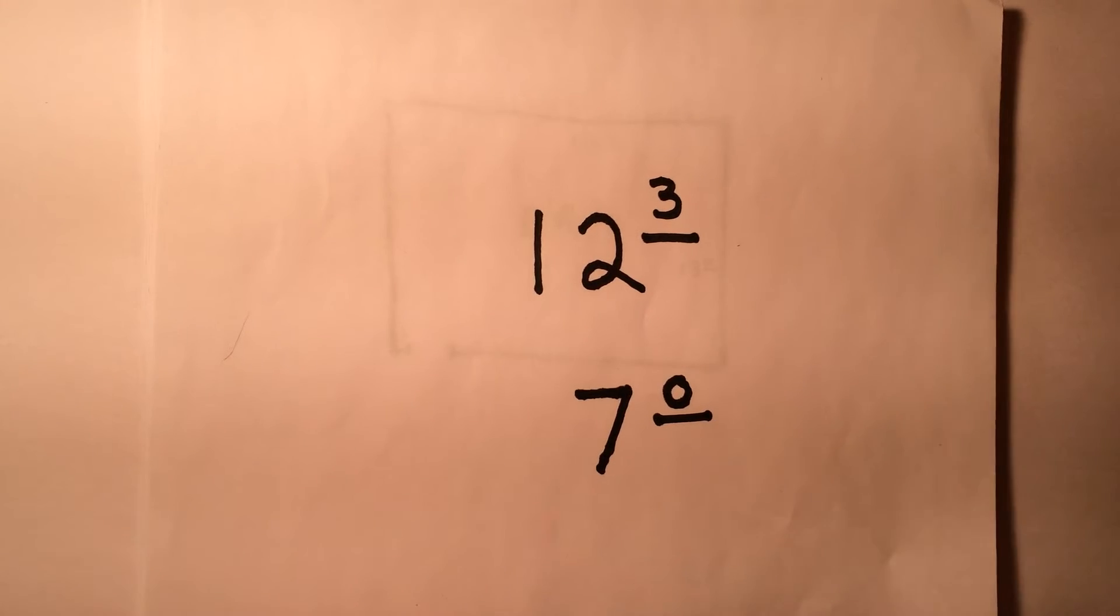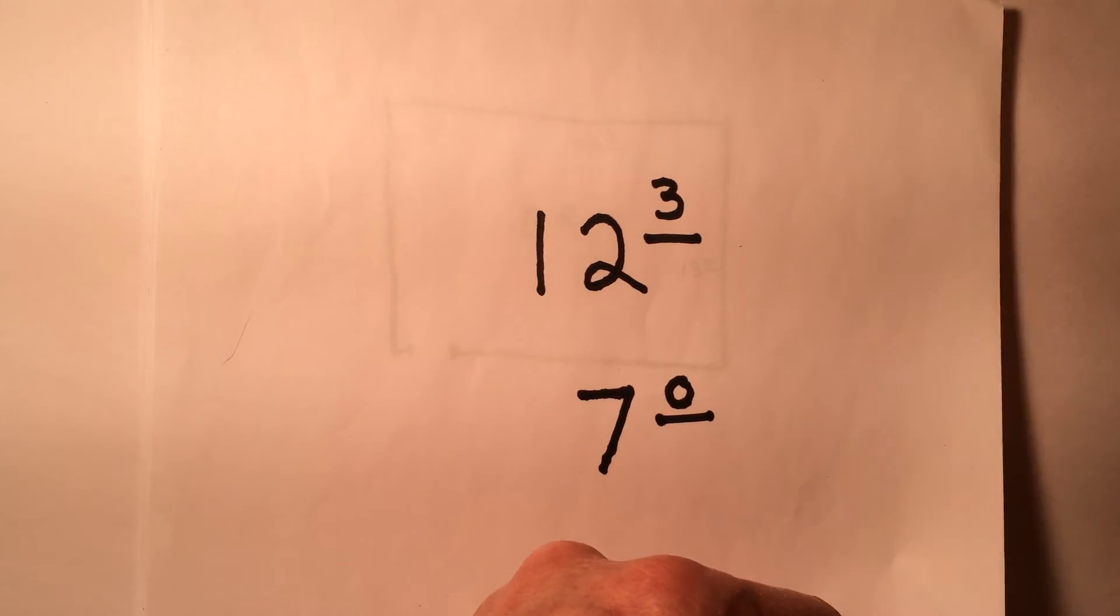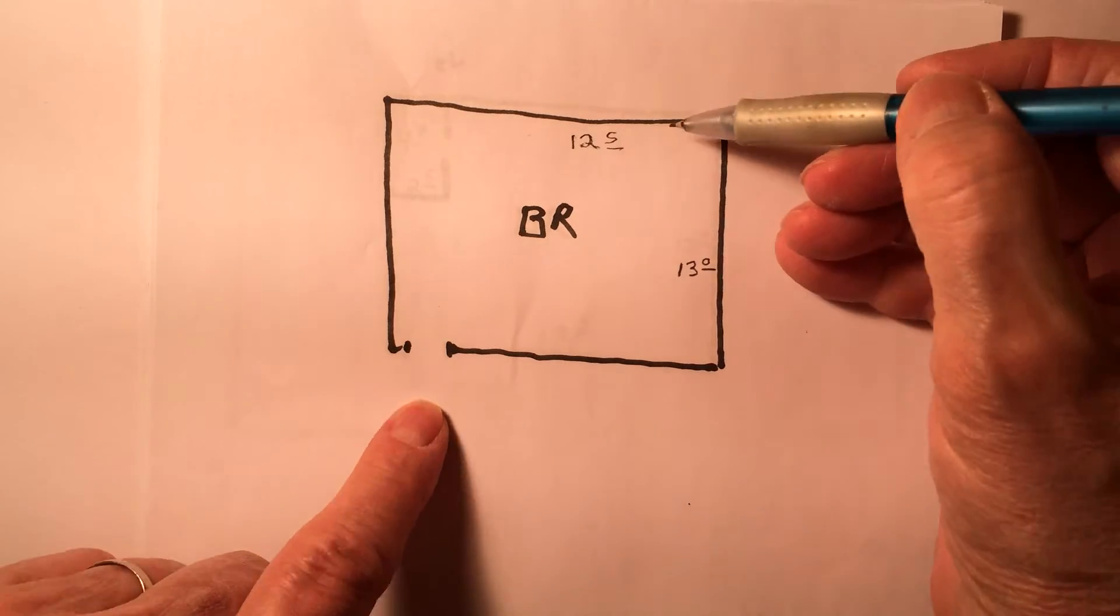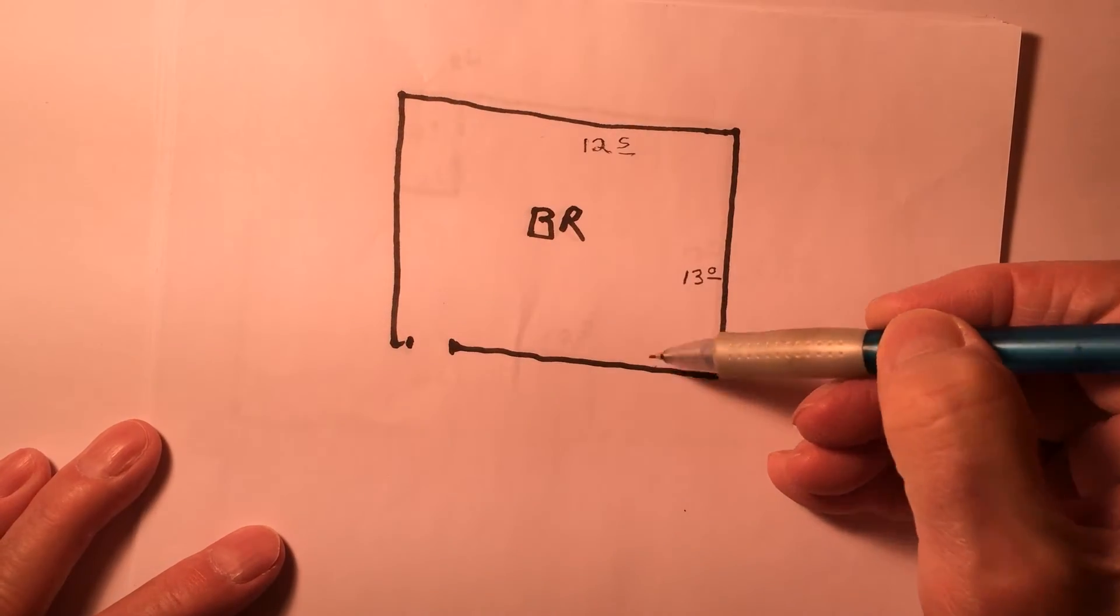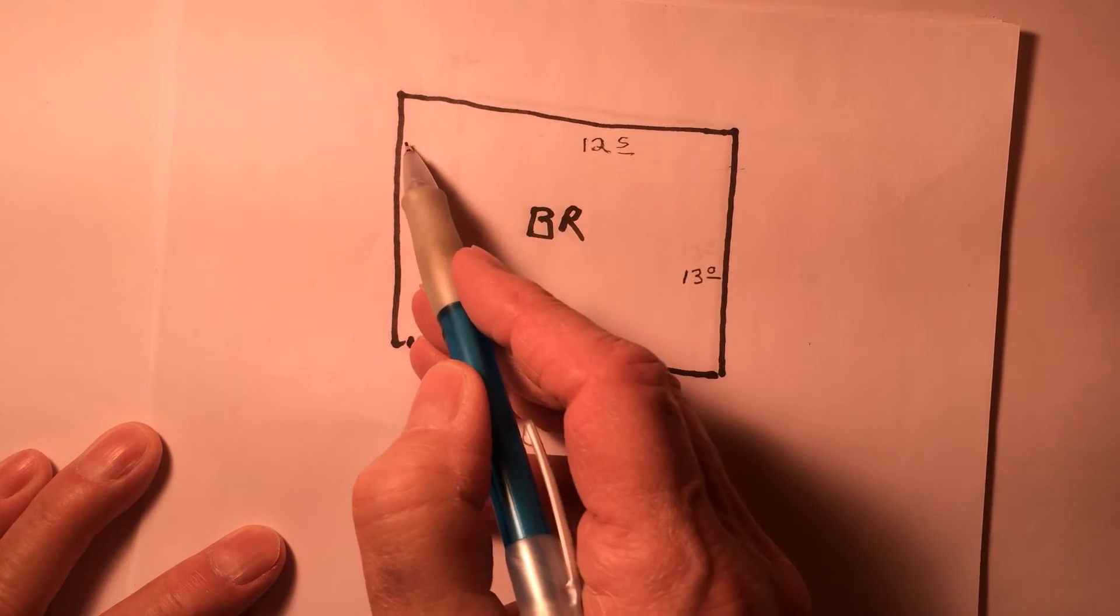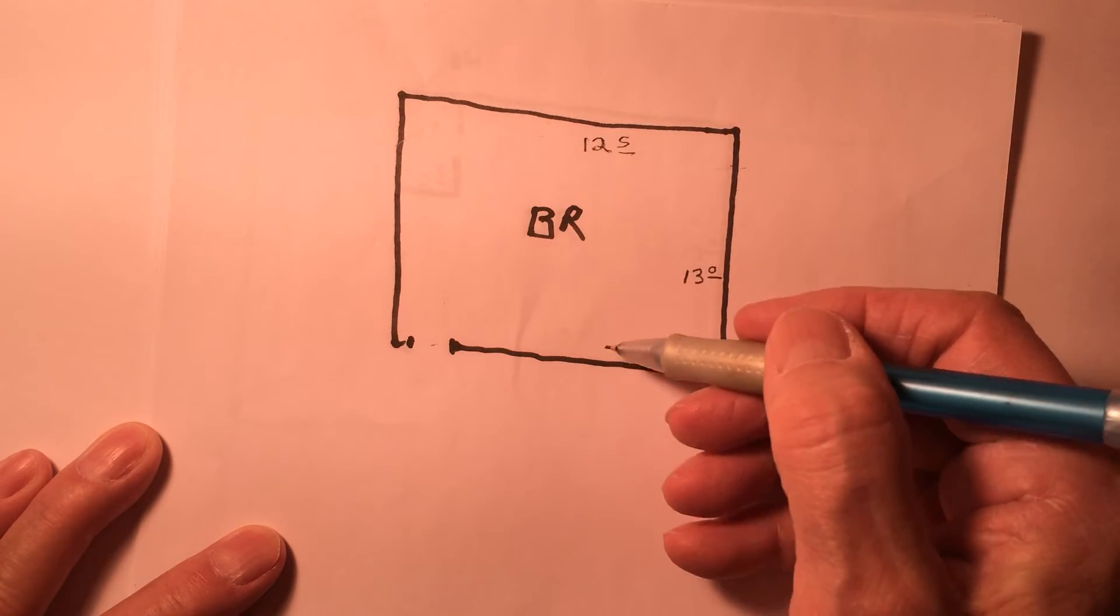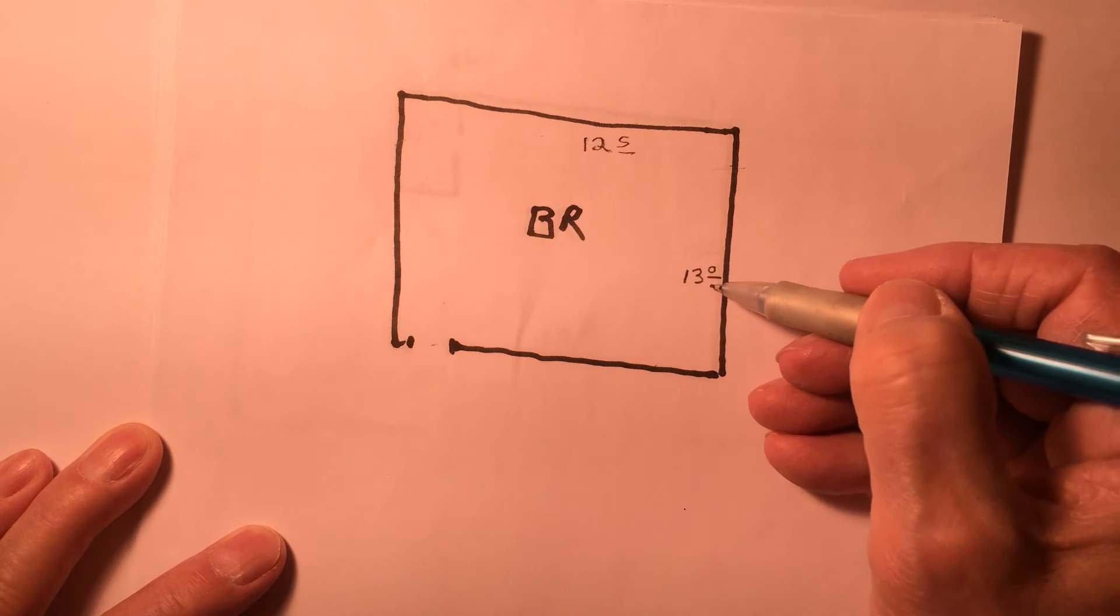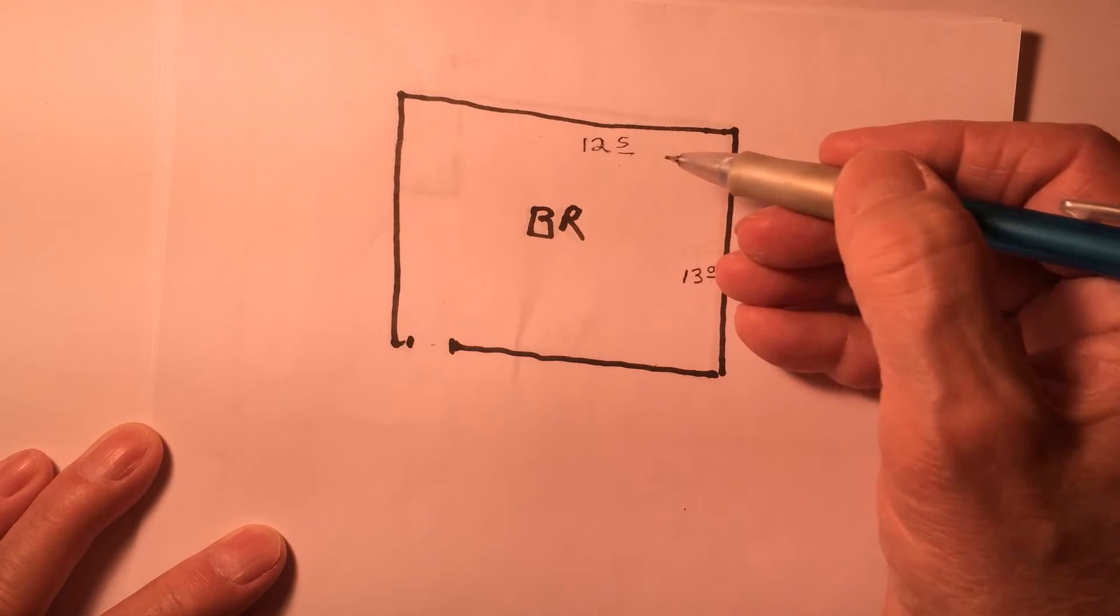Draw a simple room like this. Leave an opening for the doorway. Measure from drywall to drywall, not through the door or to the middle of the door. Just drywall to drywall, measuring above the base and quarter round if there is any. Put the numbers inside the room.